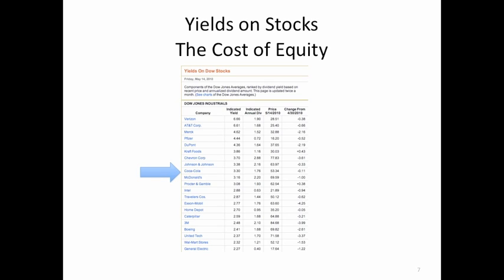The last three slides covered bond yields and the cost of debt. This slide discusses stock yields and the cost of equity — the second component of a business's cost of capital. Looking at McDonald's and Coca-Cola: Coca-Cola's indicated yield is 3.3% and McDonald's is 3.16%, right in line with the 3% to 3.5% we saw on corporate bond yields. These are established operating companies making a profit with a high probability of continuing in business, so the market indicates a stock yield of about 3% to 3.5% for high-quality companies.